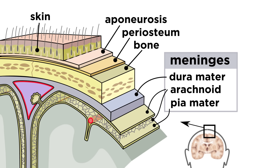We should also be aware of the structures that protect the brain. Meninges are connective tissue membranes that sit between the brain and the skull. On top is dura mater, consisting of a periosteal layer and a meningeal layer. Immediately below is arachnoid mater, filled with blood vessels. And lastly is pia mater, made of more delicate connective tissue.